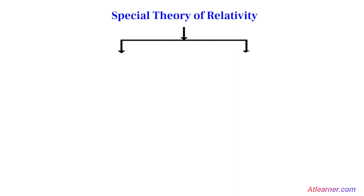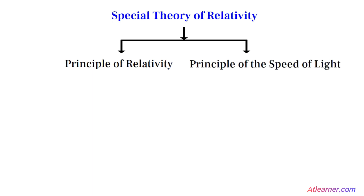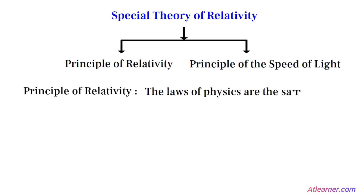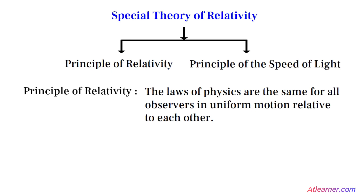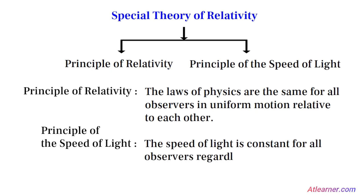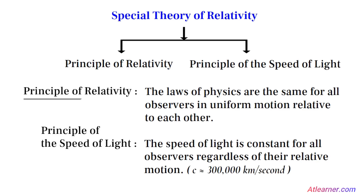The theory is built on two basic postulates, known as the principle of relativity and the principle of the speed of light. The principle of relativity states that the laws of physics are the same for all observers in uniform motion relative to each other. The second principle states that the speed of light is constant for all observers regardless of their relative motion, which is approximately 300,000 kilometers per second. These postulates may seem simple, but they have far-reaching implications for how we understand the nature of space and time.